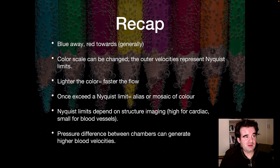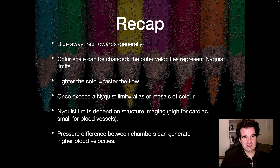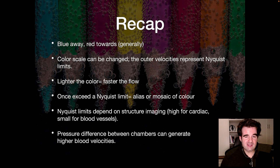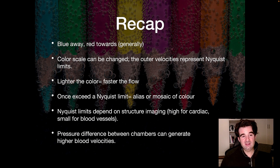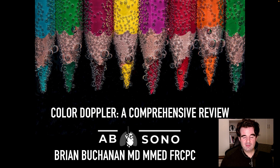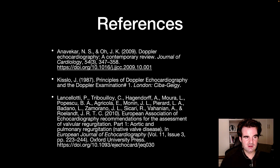We've covered a lot of concepts here, from the traditional BART — blue away, red towards — to the questions around Doppler shift, how the color scale can be changed, and you can even invert the blue and red on most machines. We also covered the Nyquist limit and aliasing, and talked about adjusting Nyquist limits for different structures — whether the ventricles, atria, or blood vessels. We also talked about how pressure differences are really important for generating high or low velocities. That's all I have for now. I hope I addressed all your burning questions in Color Doppler, and I appreciate you watching this video.